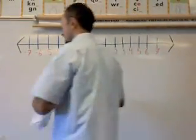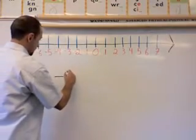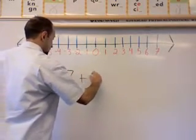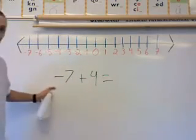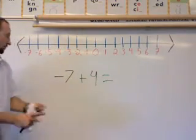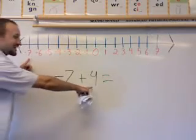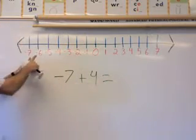Now let's look at something a little different. We are going to add a negative integer and a positive integer. So it's negative 7 plus 4.